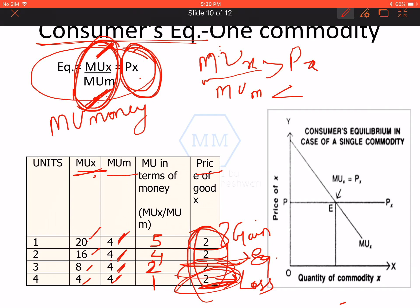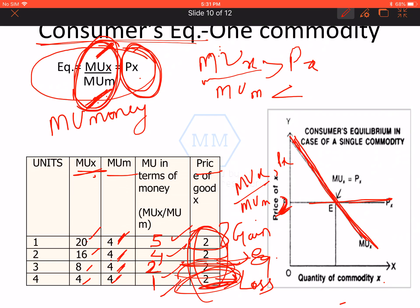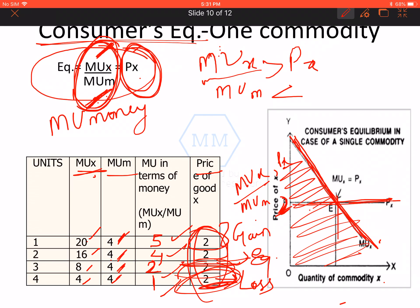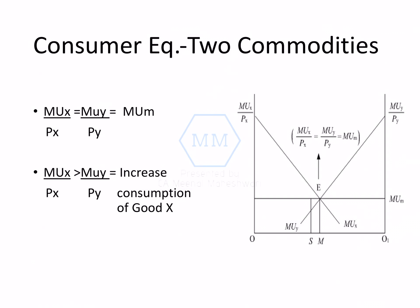If MUX / MUM is greater than PX, I am in a situation of gain and should increase my consumption to reach equilibrium. If MUX / MUM is less than PX, I should reduce my consumption. If I am at equilibrium, no change in consumption is needed. Diagrammatically, this is shown with quantity on the x-axis and MUX/MUM and Price on the y-axis. The MUX/MUM curve is downward sloping (5, 4, 2, 1) while the price line is constant at 2 rupees. The area above the price line shows consumer surplus — the gain situation. The level where MUX / MUM equals PX is the equilibrium.